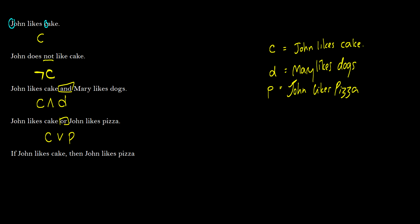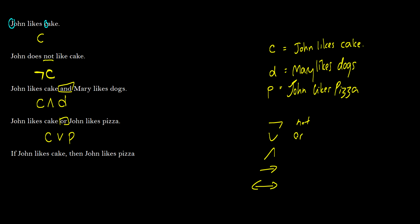Hopefully you remember all the connectives — I'll write them down: NOT, AND (∧), OR (∨), IF-THEN (→), and IF-AND-ONLY-IF (↔). Now here's our next sentence: 'If John likes cake then John likes pizza.' This is our IF-THEN sentence — IF cake THEN pizza — so the formalization is C → P.